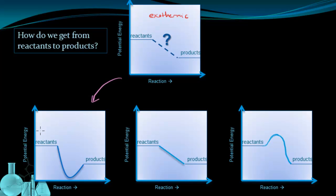In the first scenario, we have some amount of energy for the reactants, and we can see that energy going down and dipping actually lower, then coming back up to the energy of the products. In the second scenario, there's a steady decrease in energy from the reactants to the products. And in the third scenario, we see the energy go up first and then drop down to the final energy level of the products.